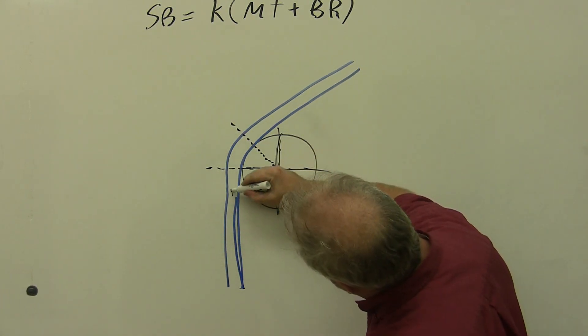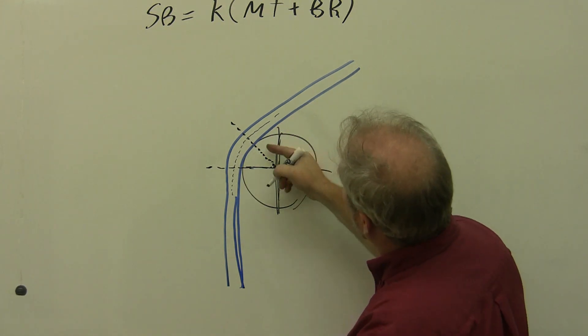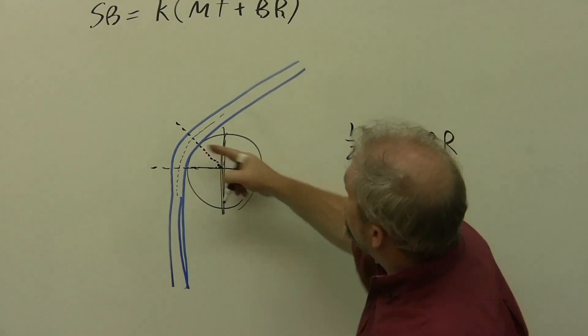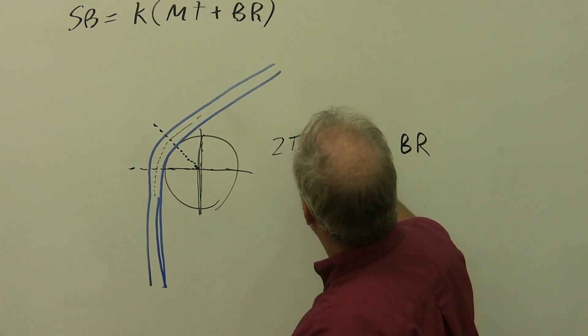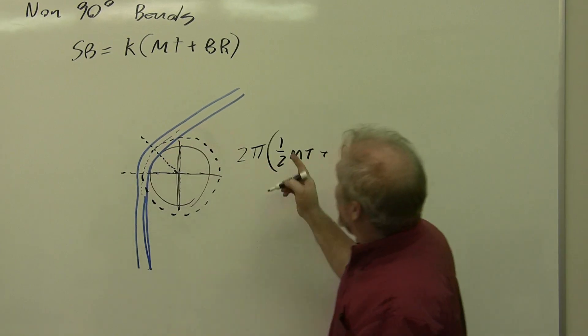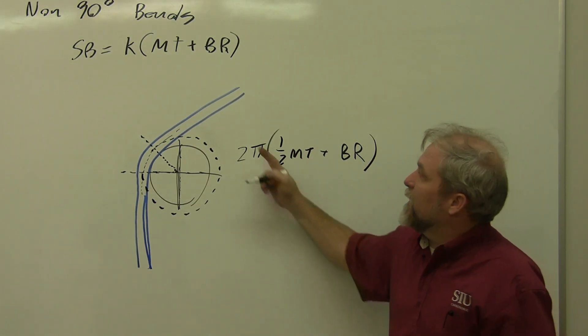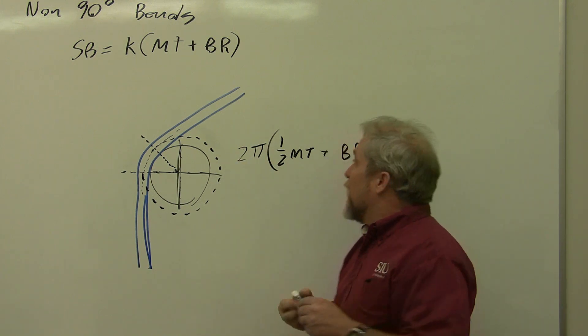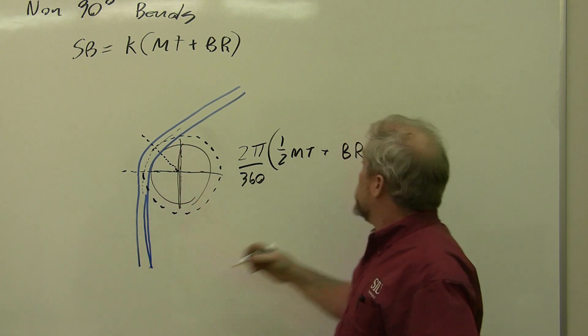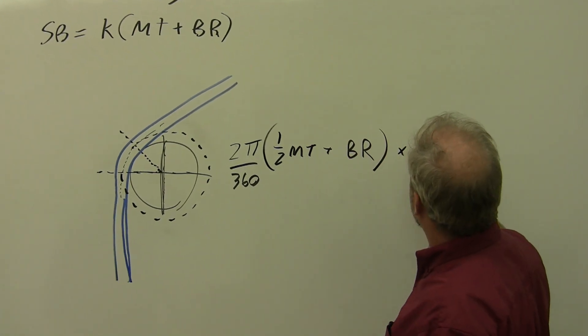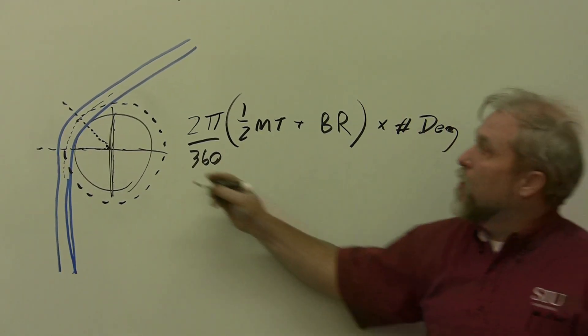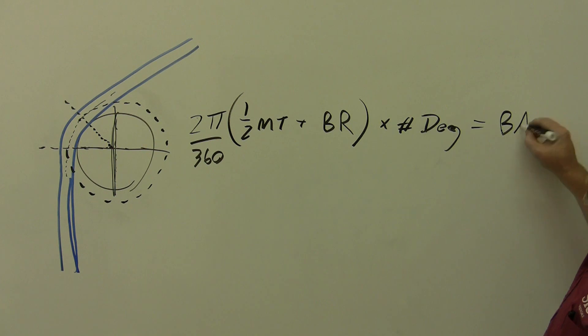Don't forget that we had a neutral axis in the middle of the sheet metal, and the distance to the neutral axis was equal to one half of the material thickness plus the bend radius. We found that the distance to go all the way around this circle was two pi times a half the material thickness plus the bend radius. Last time we just divided that by four for a 90 degree bend. This time we're going to divide that by 360, and that's going to give us the distance that we sweep out per degree of bend. All we're going to have to do is multiply by the number of degrees. This formula gives us the bend allowance for a non-90 degree angle.